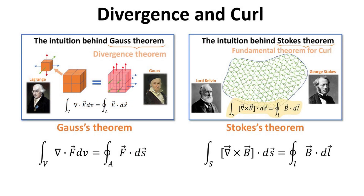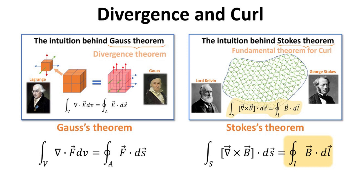Mathematically, the intuition behind divergence and curl are encapsulated in the Gauss and Stokes' theorems respectively. The divergence theorem tells us that the divergence of a vector field integrated over the volume V must equal the amount of flux emanating out of the surface of the volume. The Stokes' theorem tells us that the curl of a vector field integrated over a surface S must equal the closed path line integral of the vector field over the perimeter of S. These two theorems relate the local behavior of the vector fields — namely divergence and curl — to its global behavior in terms of flux escaping and field circulation respectively. Check out the videos on Gauss and Stokes' theorem in this playlist after this video.